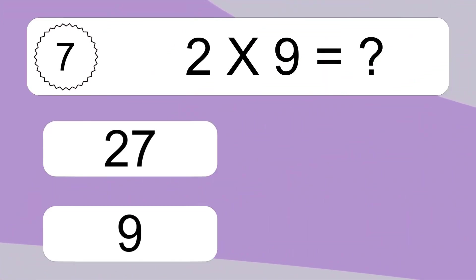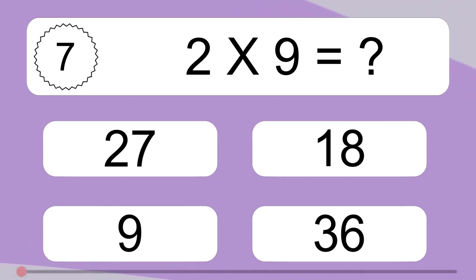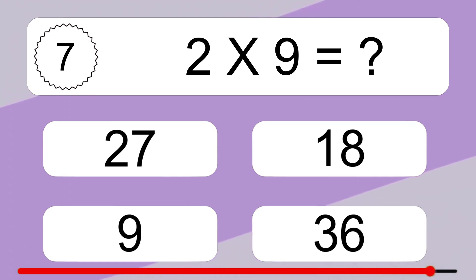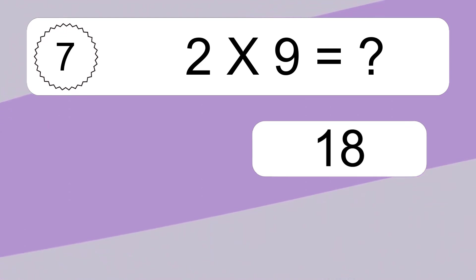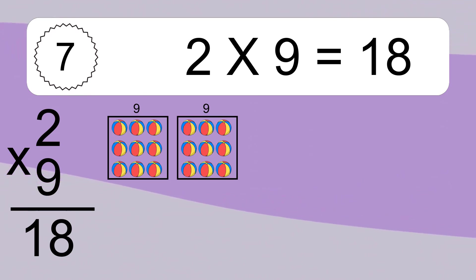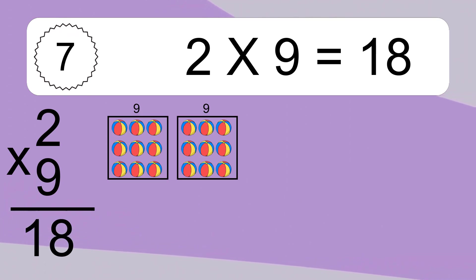2 times 9 equals what? We have 2 boxes, and each box has 9 colorful balls inside. If you count all the balls in all the boxes together, you will have 2 times 9 balls. This equals 18 balls.